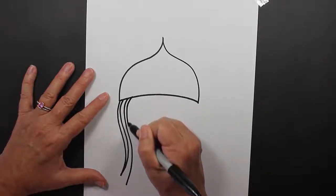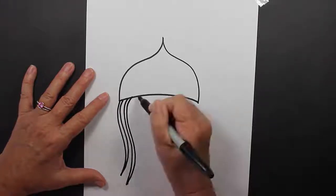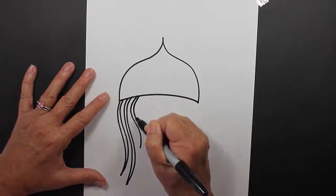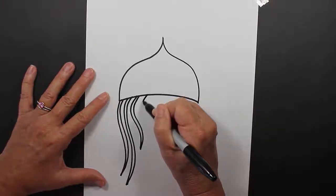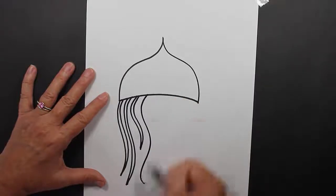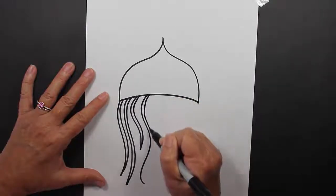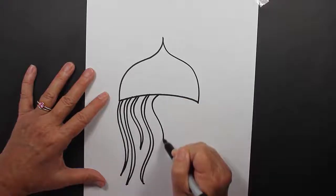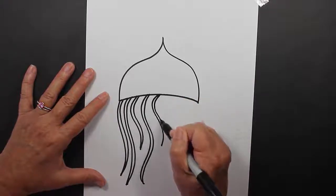We're going to just keep doing that all the way across our curved line. Some are small and some are bigger. Some are wavier and some are straighter. It's up to you how you'd like to make your tentacles.